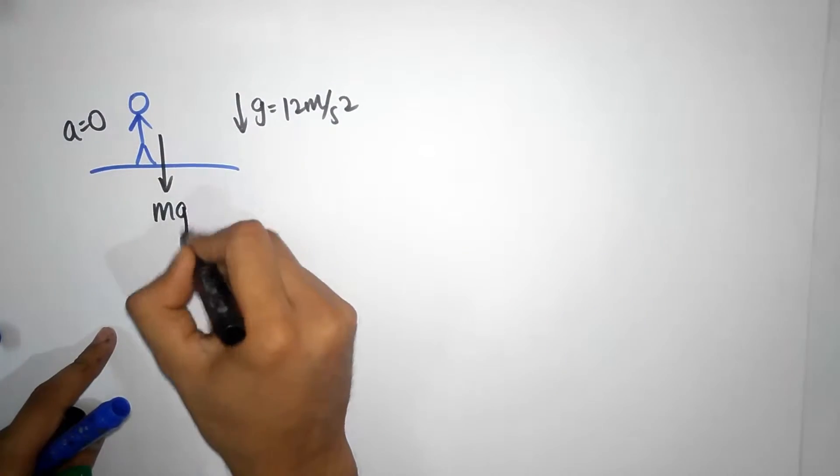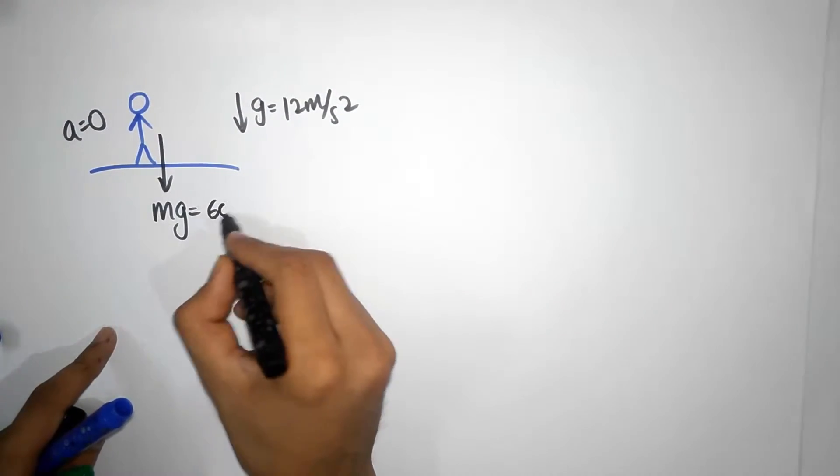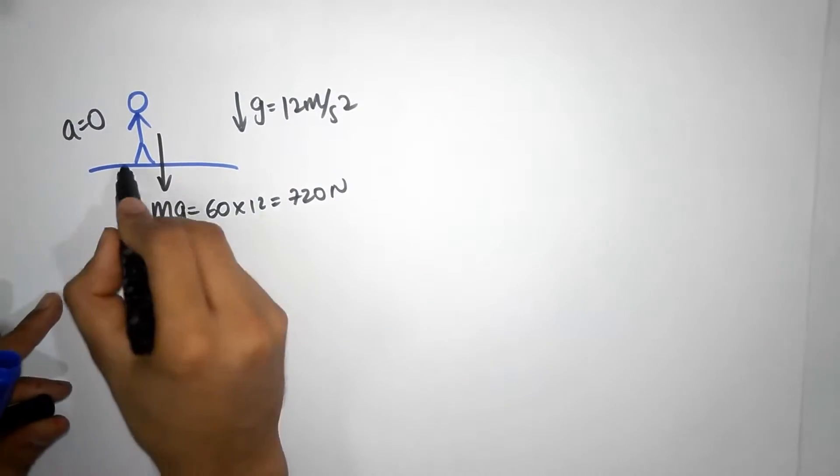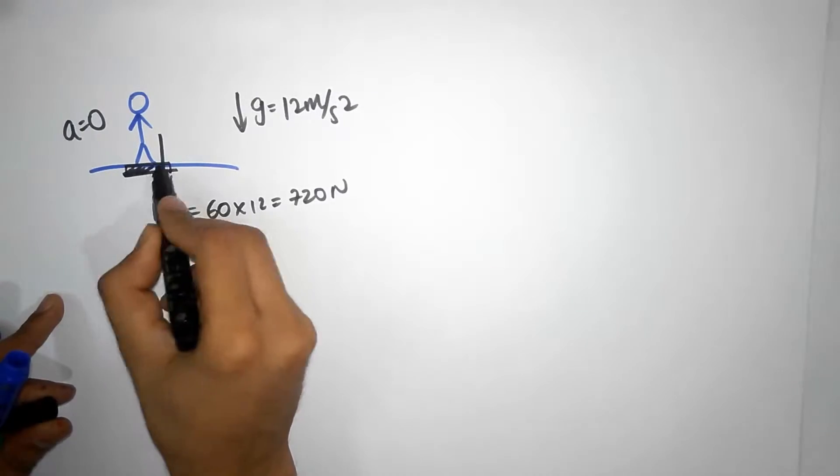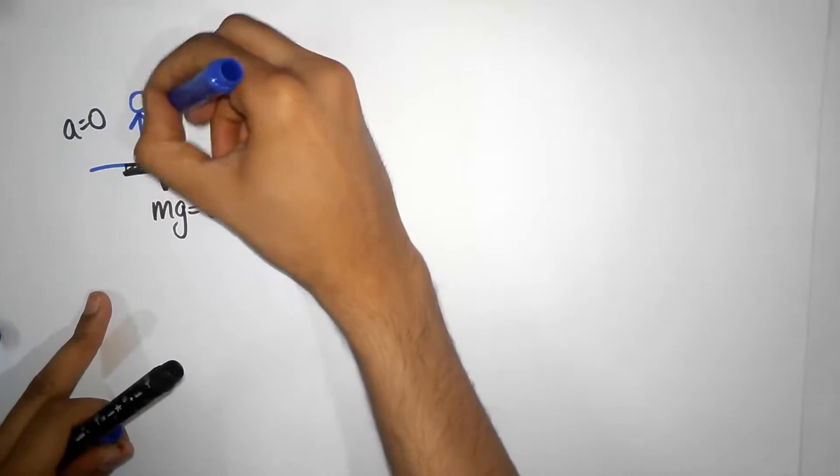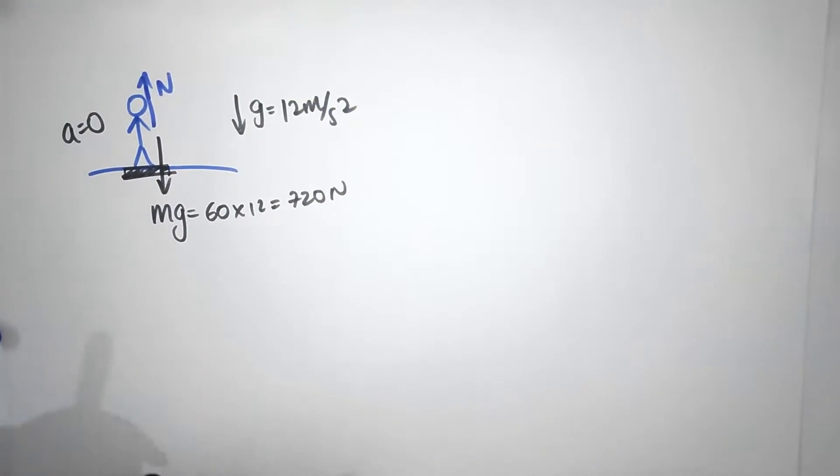So gravitational force acting on you is mg. Now that is 60 into 12, that is 720 Newtons. And of course there's your handy scale here, and the scale is going to push you back up. That's the normal force.